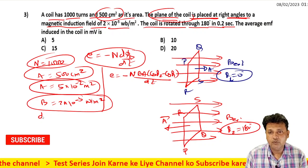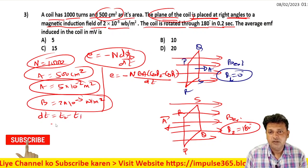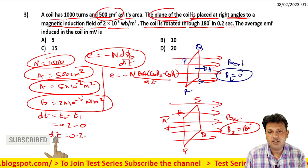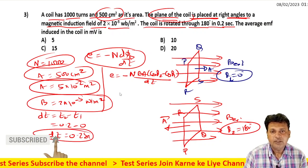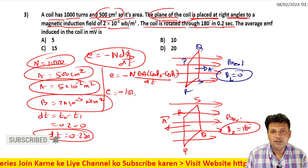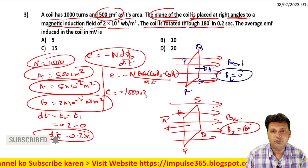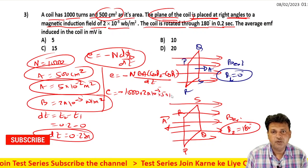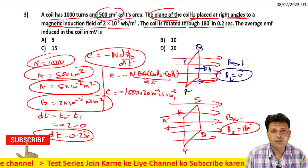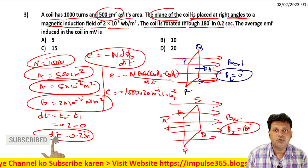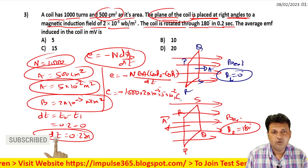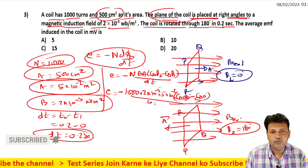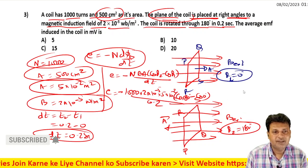B into A cos theta 2 minus cos theta 1 divided by dt. And dt is equal to t2 minus t1. t2 value is 0.2 seconds minus 0, so dt value is 0.2 seconds. Now putting the values: minus 1000 × B value 2×10⁻⁵ × area value 5×10⁻² × cos theta 2 minus cos theta 1, which is cos 180° minus cos 0°, divided by 0.2.